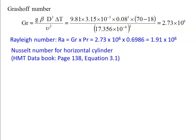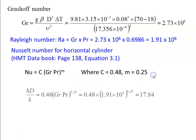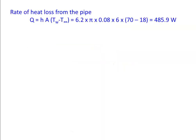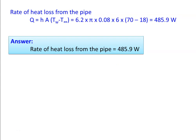For the horizontal cylinder, from page 138 equation 3.1: Nu = C·(Gr·Pr)^m, C = 0.48, m = 0.25. So h·D/k = 0.48×(1.91×10⁶)^0.25 = 17.84. Heat transfer coefficient h = 17.84×0.02784/0.08 = 6.2 W/m²K. Heat loss from the pipe Q = h·A·(Tw − T∞) = 485.9 W. The amount of heat loss from the pipe surface by natural convection is 485.9 W.